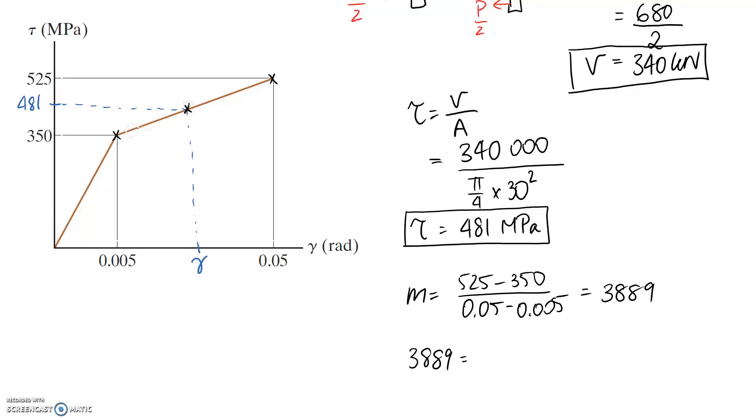And now if I reapply this equation, I know that my gradient is 3889, but I'm going to look between these other two points. Okay, so it's going to be the rise is equal to 481 minus 350, and the run this time is going to be this gamma value that I'm looking for minus the 0.005.